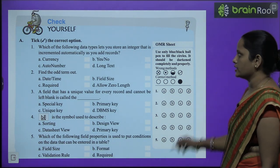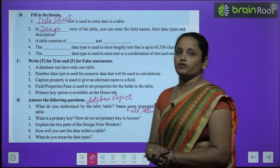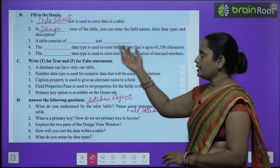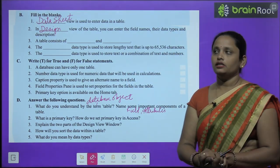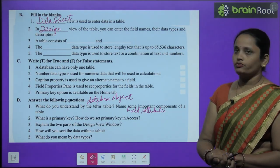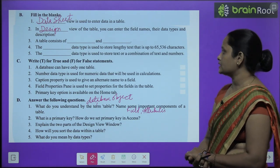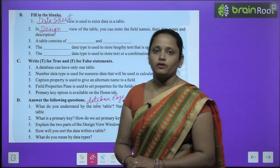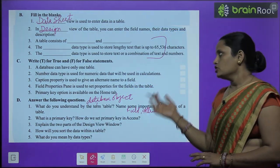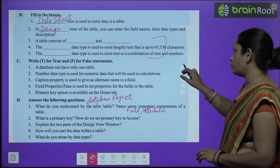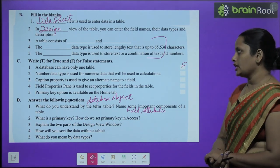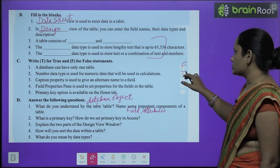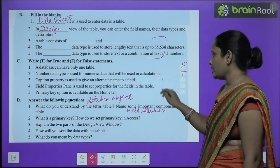Do the rest of the questions yourself. Now let's move on to Part B — Fill in the Blanks. First: Datasheet View is used to enter data in a table. Second: In Design View of the table, you can enter the field name, the data type, and description. Do the rest yourself. Part C — True or False: A database can have only one table — False. Number data type is used for numeric data that will be used in calculation — True. Do the rest yourself.